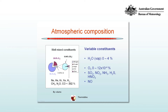The rest of the well-mixed constituents consists of those you can see there — neon, helium, krypton, xenon, hydrogen, methane, and so on. And they all add up to less than 0.002%.